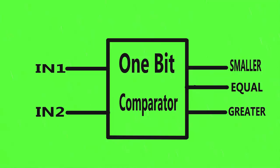Hello guys, today we are going to learn how to build a 1-bit comparator using Verilog code. As you can see, a 1-bit comparator has two inputs: input1 and input2. These are the bits that we have to compare.